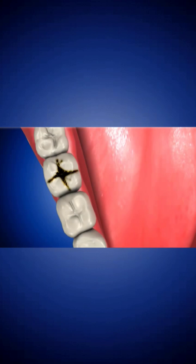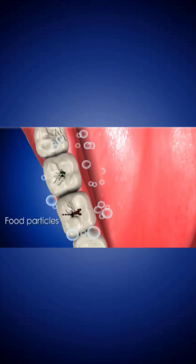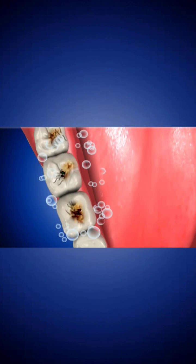Many different types of bacteria normally live in the human mouth. They accumulate along with saliva, food particles, and other natural substances on the surface of the teeth in a sticky film called plaque.